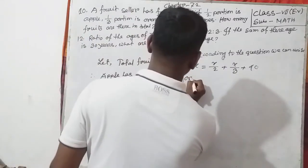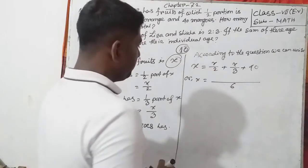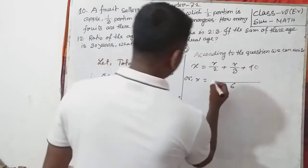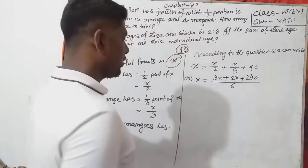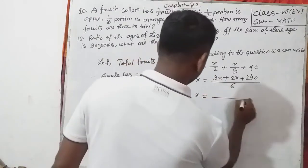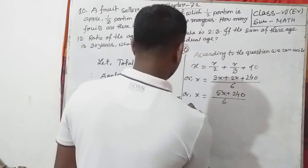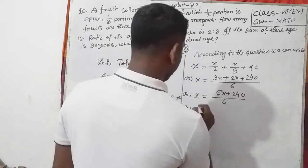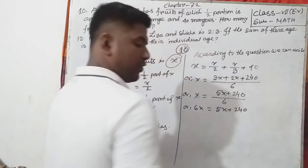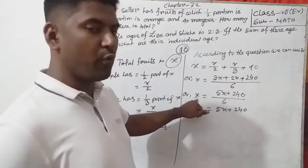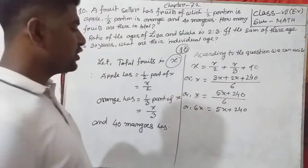We can write it with LCM. The LCM of 2 and 3 is 6. So dividing 6 by 2 gives 3, and we can write 3x plus 2x plus 240. Or we can write x equals over 6: 3x plus 2x plus 240. Cross multiplication — the denominator is 1 — so we can write 6x equals 5x plus 240.